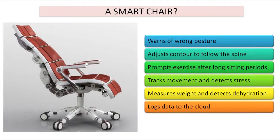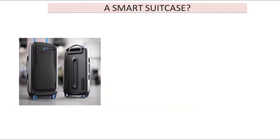This data is going to be used by many authorities and various organizations for their own purpose. The chair measures weight and detects dehydration — the moment dehydration is detected, it can send a message to whoever is going to give you water. All data is logged in the cloud where they can get to know your day-to-day pattern. There is also a smart suitcase — the moment I book my air ticket on the internet, the internet communicates to the suitcase saying this person is traveling to the US, capturing the current weather condition and communicating to the suitcase what should be packed.